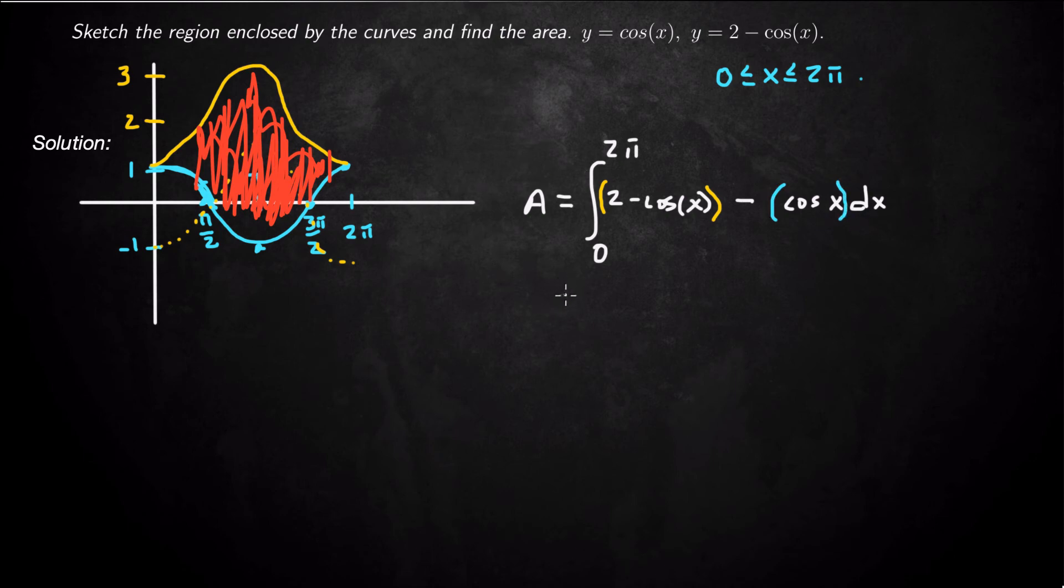Now I'll just integrate. The area is going to be the integral from 0 to 2 pi. I'm going to simplify the integrand first, so I'll make that 2 minus 2 cosine x dx. That's going to be 2x minus 2 sine x from 0 to 2 pi.